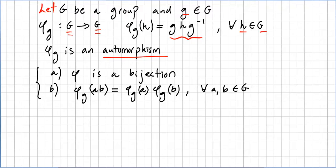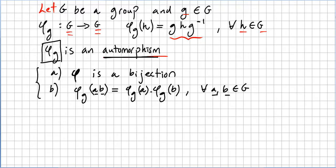In order for φ_g to be an automorphism, we need two conditions. First, φ must be a bijection, and second, φ_g(ab) must equal φ_g(a) · φ_g(b) for all elements a and b in the group G. We have to prove that φ_g is an automorphism, meaning we prove it is injective and surjective, and then prove this homomorphism condition.